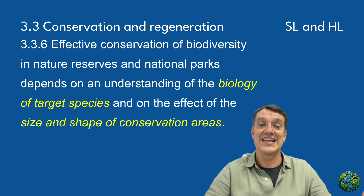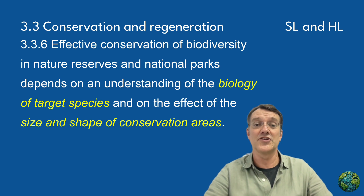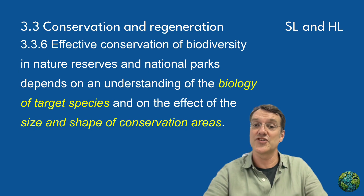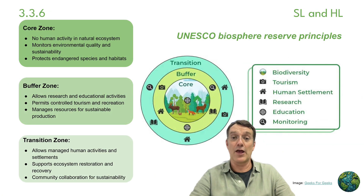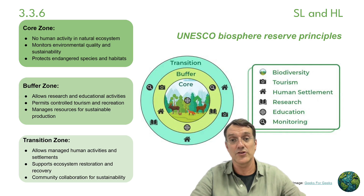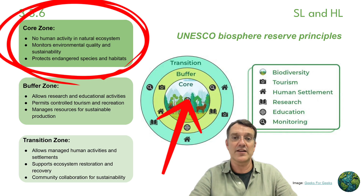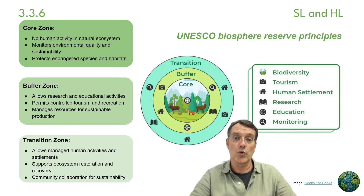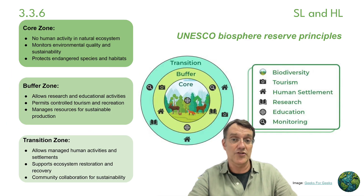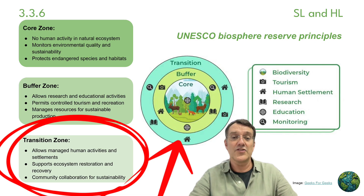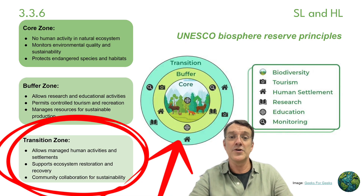Effective conservation in nature reserves and national parks depends on understanding the biology of target species and the effect of conservation area size and shape. UNESCO Biosphere Reserves exemplify thoughtful conservation design with three distinct zones. The core zone permits no human activity, monitors environmental quality, and protects endangered species and habitats. The buffer zone allows research, educational activities, controlled tourism, and sustainable resource management. The transition zone accommodates managed human activities and settlements, supports ecosystem restoration, and promotes community collaboration for sustainability.